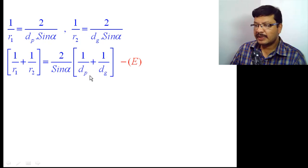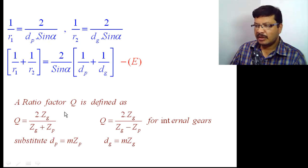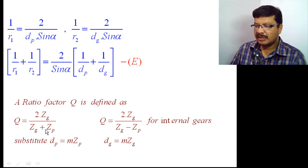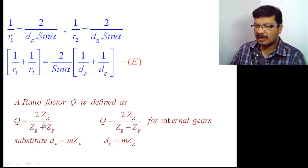The ratio factor, denoted by q, is defined as q = 2·Zg / (Zg + Zp), where Zg is the number of teeth on the gear and Zp is the number of teeth on the pinion. Since dp = m·Zp, you can replace the number of teeth with pitch circle diameters. This formula is for external gears — we will consider only external gears for this derivation.